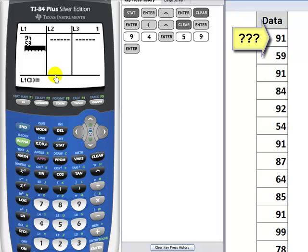The third number is 91. 9, 1, Enter. I'm going to continue doing this until I've entered all 13 numbers.